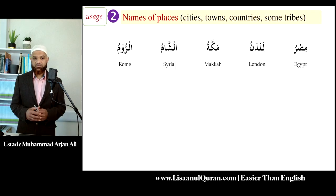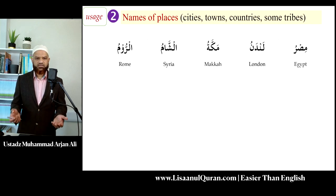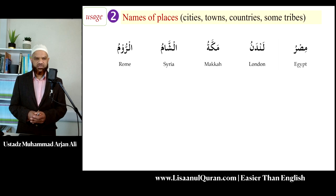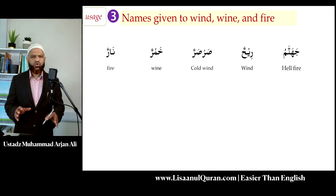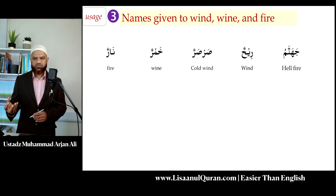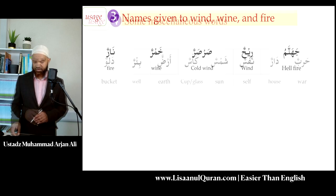The second category is names of places - cities, towns, countries, and some tribes - which are treated as feminine in Arabic. Examples: Misru (Egypt), London, Makkah, al-Sham (Syria), al-Rum. The third category is words for wine, wind, and fire. Examples: jahannamu (hellfire), rihun (wind), sar-sarun (cold wind), khamrun (wine), narun (fire). These types of words are treated as feminine in Arabic.